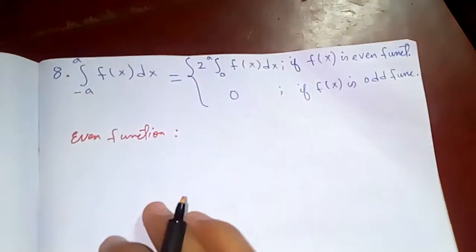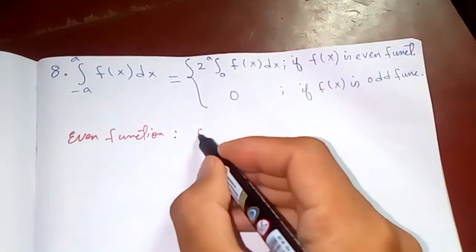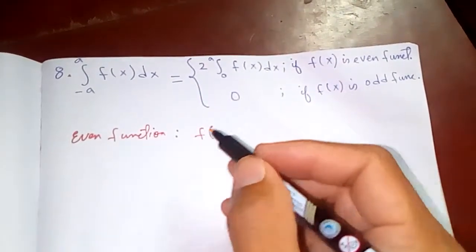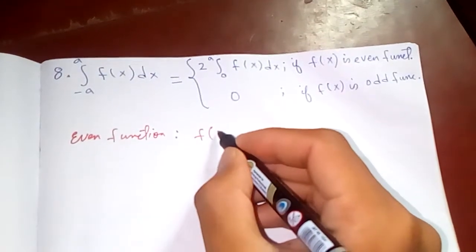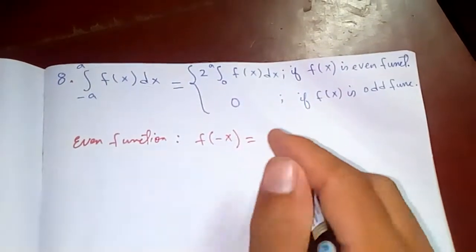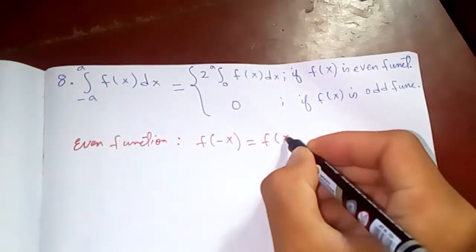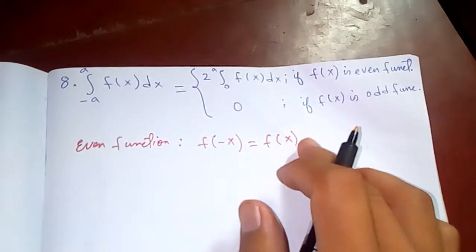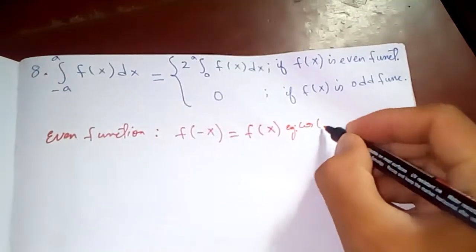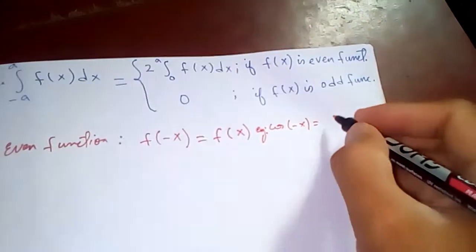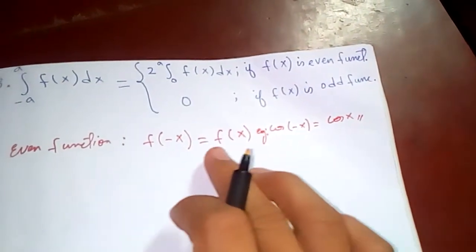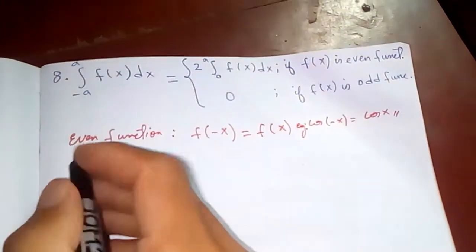An even function is defined as: if you have a function f(x) and you take f of negative x and you get f(x) back, then it is called an even function. For example, cosine of negative x equals cosine x, so cosine is an even function.